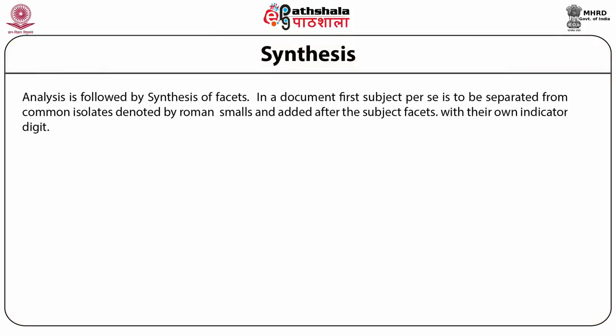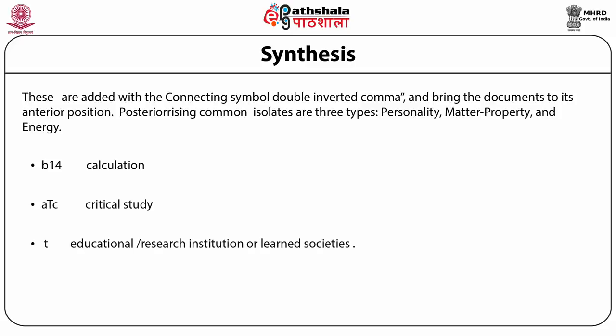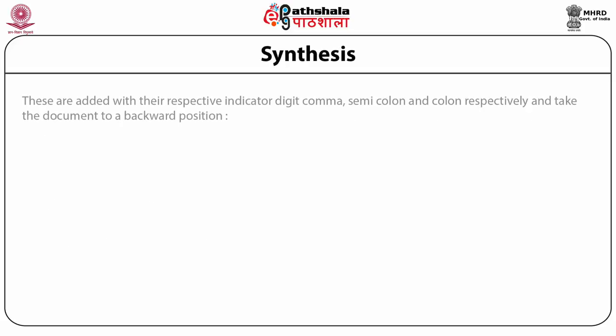Analysis of subjects into facets and isolates is followed by synthesis of facets. First, the subject per se is separated from common isolates, denoted by Roman smalls and added after the subject facets with their own indicator digits — for example, A (bibliography), K (encyclopedia), M (periodical). These are added with connecting symbols (double inverted comma in the seventh edition) and bring the document to its anterior position. Posteriorizing common isolates are of three types — personality, matter, and energy — such as calculation, critical study, or educational research, added with comma, semicolon, or colon respectively, taking the document to the backward position.